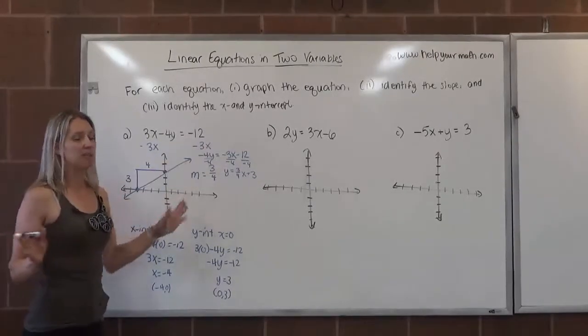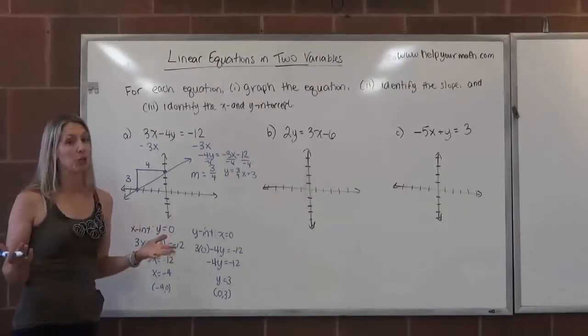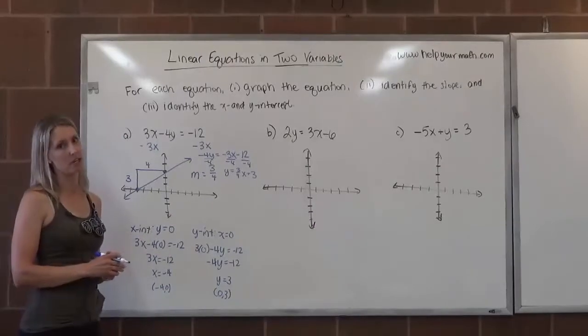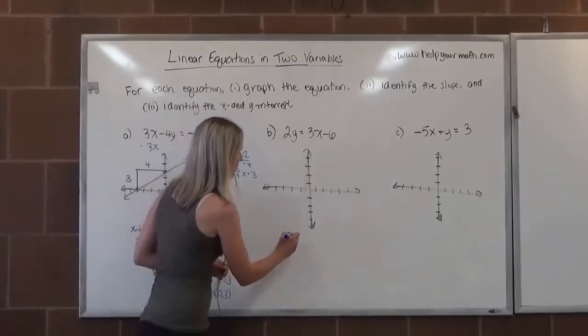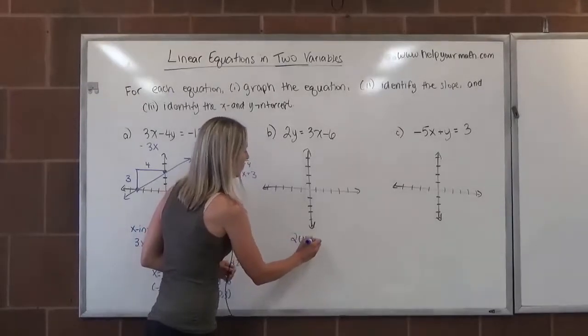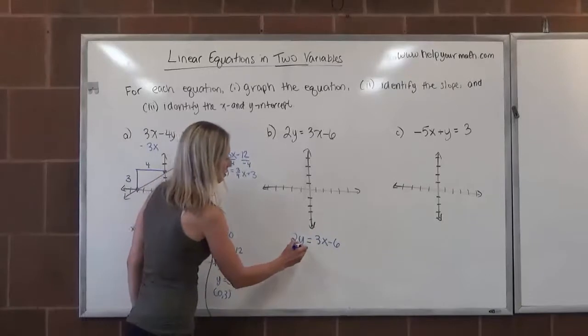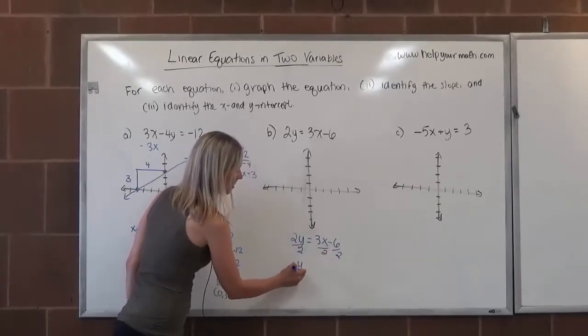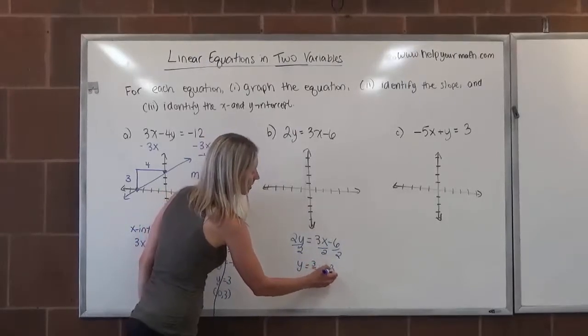For letter B, this is not any particular form. It's not standard form. It's not slope-intercept form, although it is really close to slope-intercept form. So maybe the best strategy here is to rewrite it in slope-intercept form and then we can find the x-intercept later. If we're going to write it in slope-intercept form, we have one thing to do. We just need to divide everything by 2. So if I divide by 2 here, here, and here, that would give me y equals 3 over 2x minus 3.